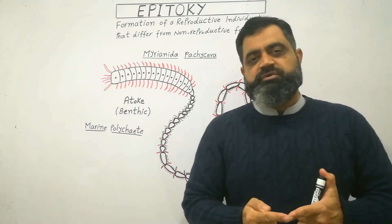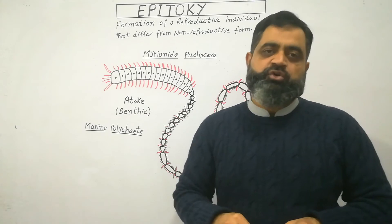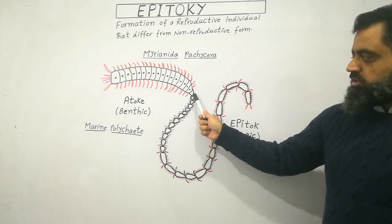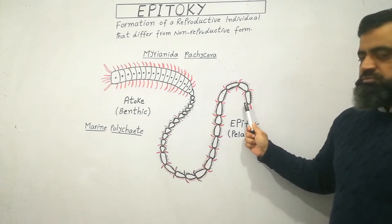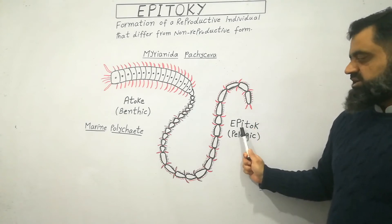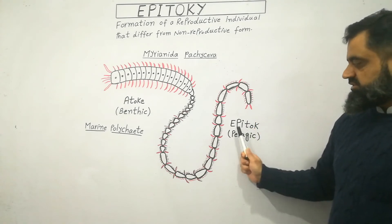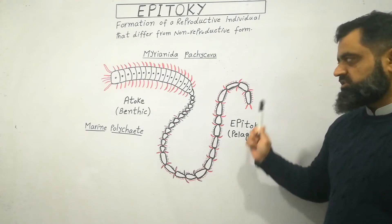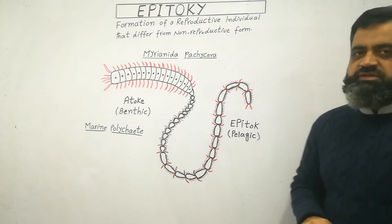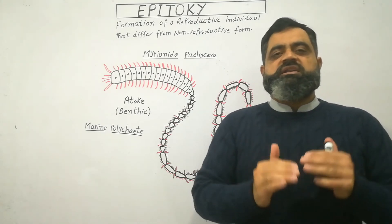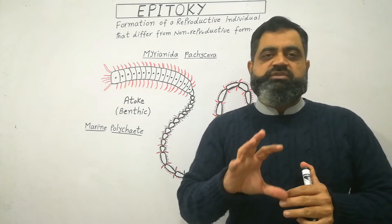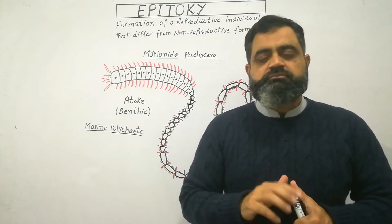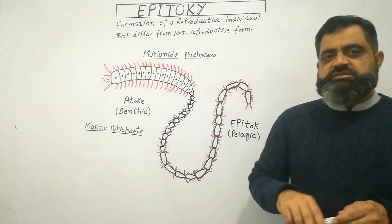When the breeding season starts, it changes its body form into a reproductive form known as the epitoke. From this area of the body to this area of the body is known as the epitoke, and this body form of the worm is pelagic — meaning it lives in the open water of the sea or ocean.